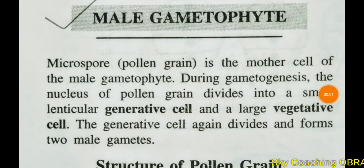The male gametophyte is the micro spore, also called the pollen grain, which is the mother cell of the male gametophyte. We are learning about angiospermic plants, which have distinct male and female gametophyte reproductive structures. The male gametophyte is called the micro spore or pollen grain, and it is developed by the male gametophyte.